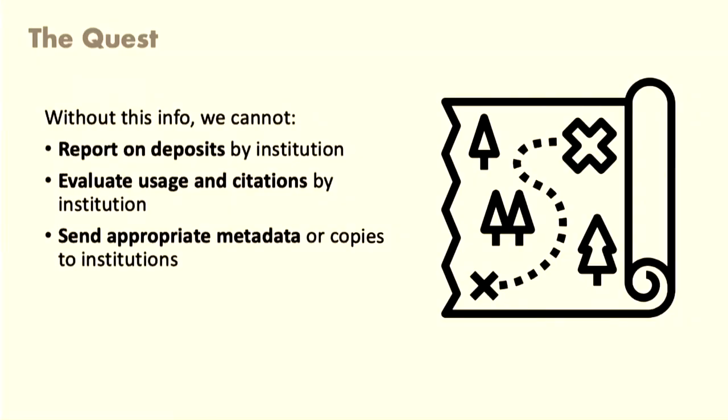That's a huge missing thing that we're looking for. A lot of institutions want to know research output from their institution. We want to know the usage by researchers in their institution. We want to be able to see what's coming in to a central place like Dryad and then send it back out to an institution. Right now, we just don't have any standard way to find that, and we don't even have that raw information to start with.